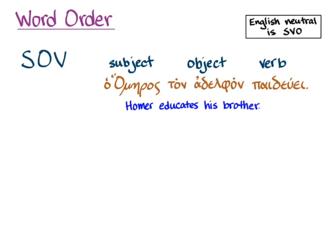So in Greek, the subject comes first, the object comes next, and the verb comes last — S-O-V. But in English, the way to express that neutrally is to put Homer, then the verb, then the direct object — subject, verb, direct object: 'Homer educates his brother.'